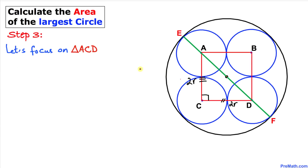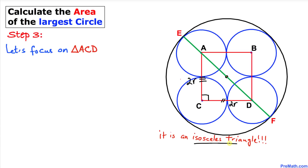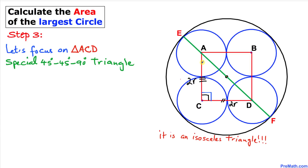Now let's focus on right triangle ACD. We know this side is 2r and this side is 2r as well, so this triangle is an isosceles triangle. Therefore this is a special 45-45-90 degree triangle, meaning this angle is 90 degrees, this angle is 45 degrees, and this angle is 45 degrees. Adding all three angles gives 180 degrees.